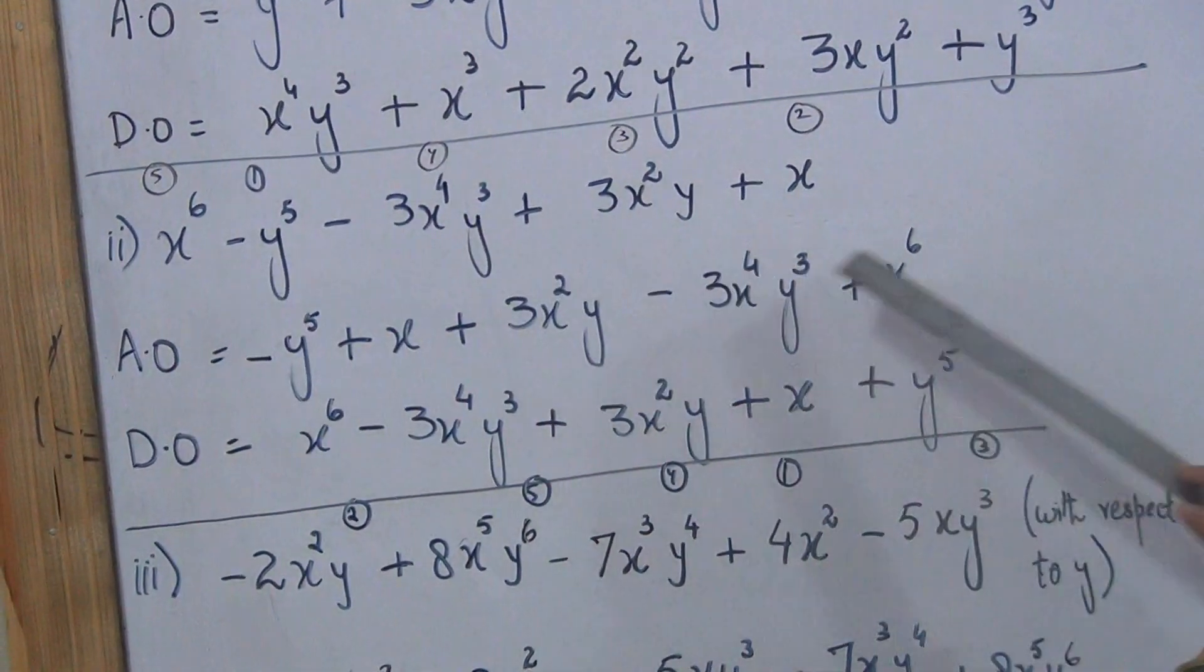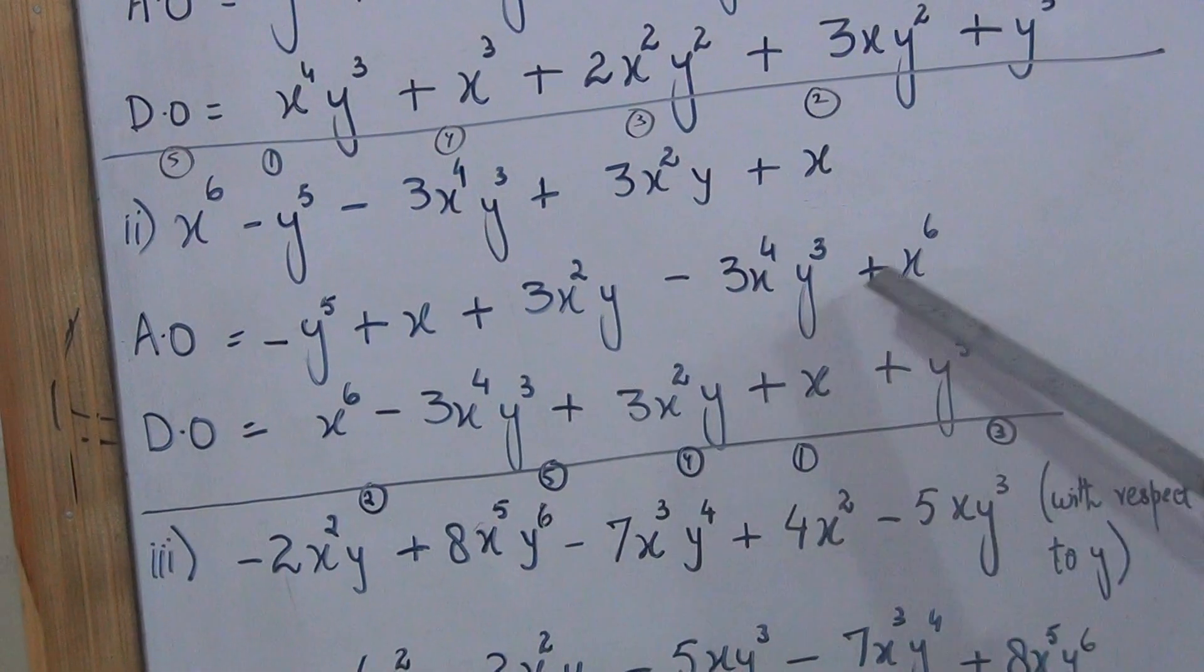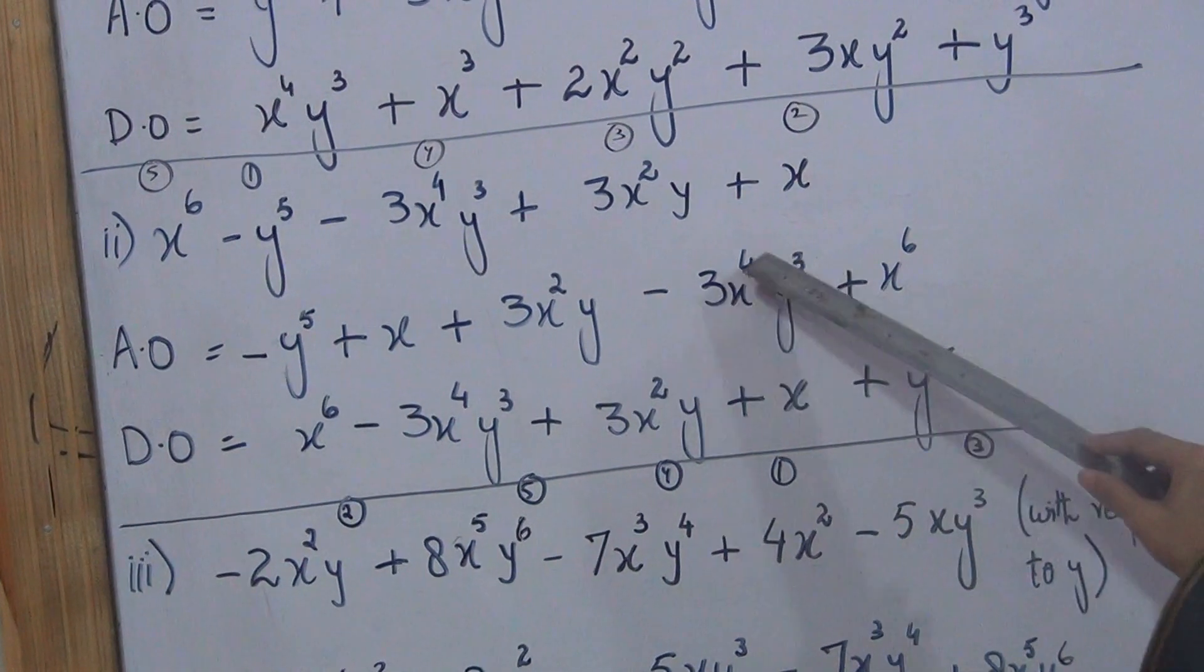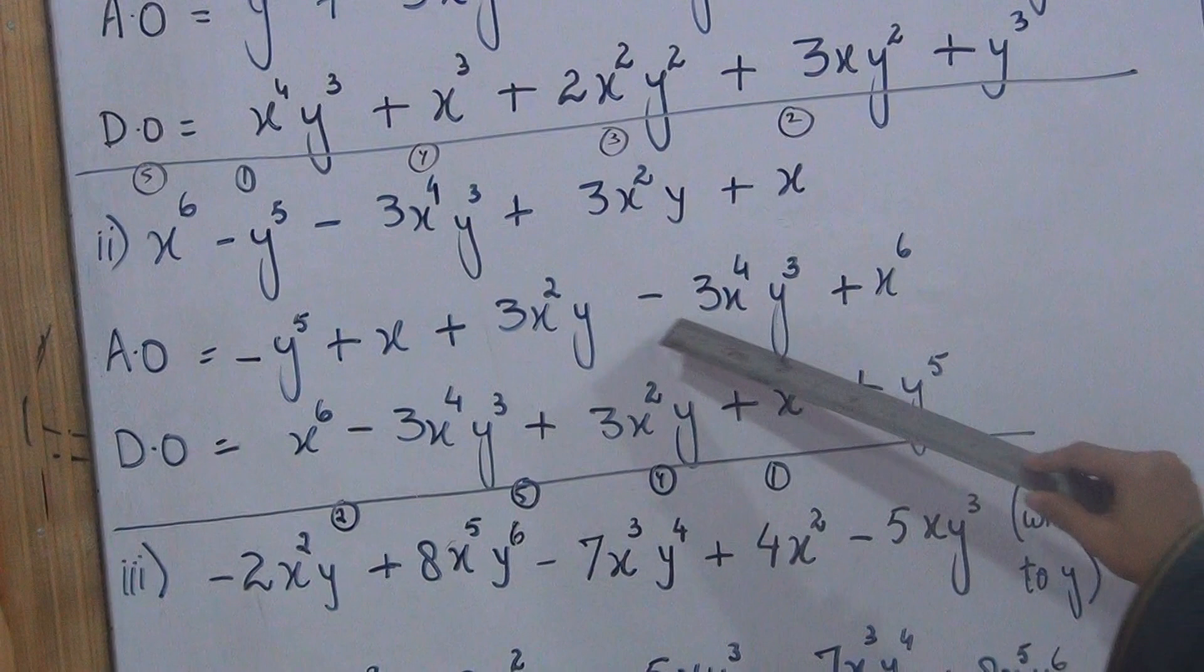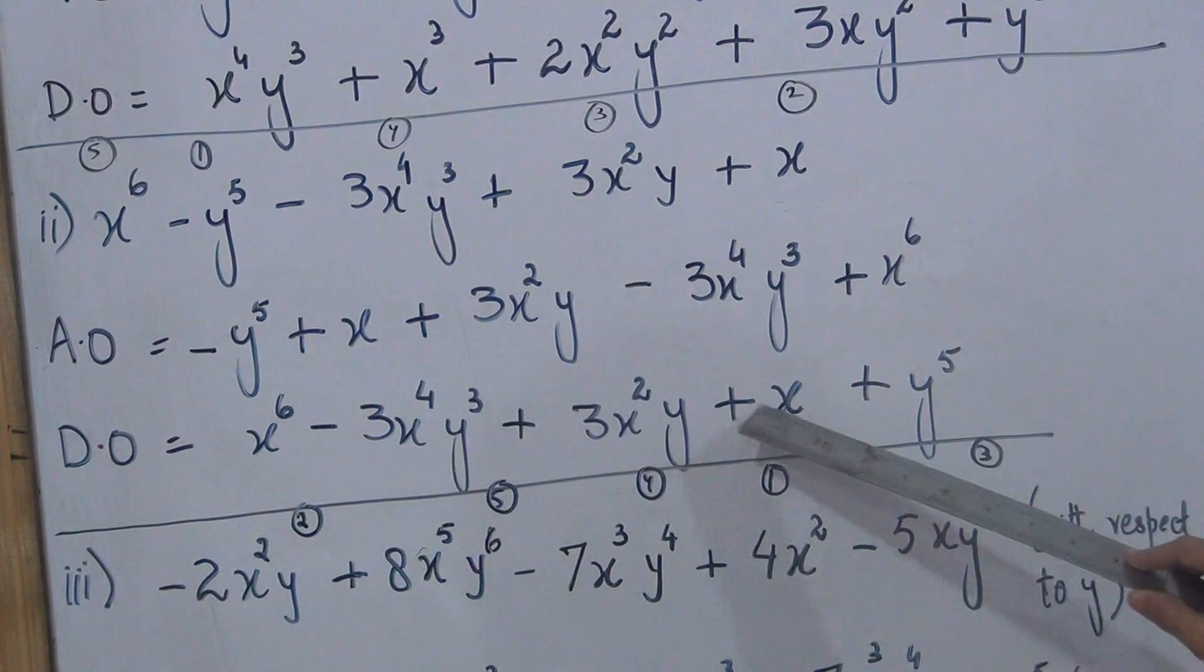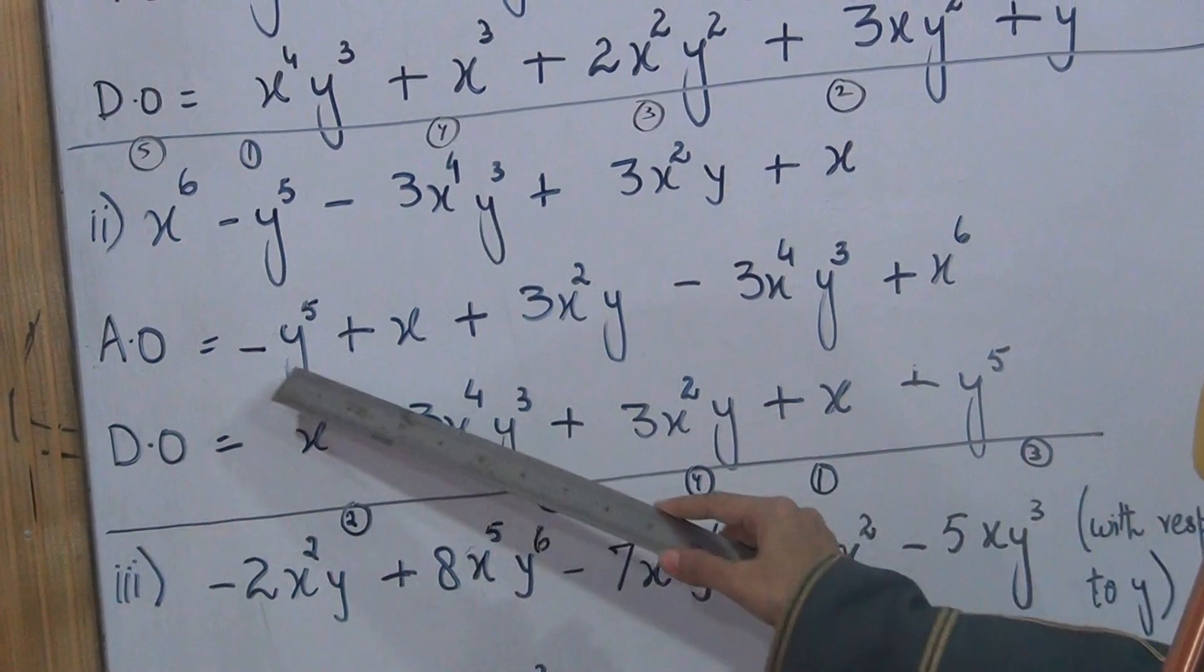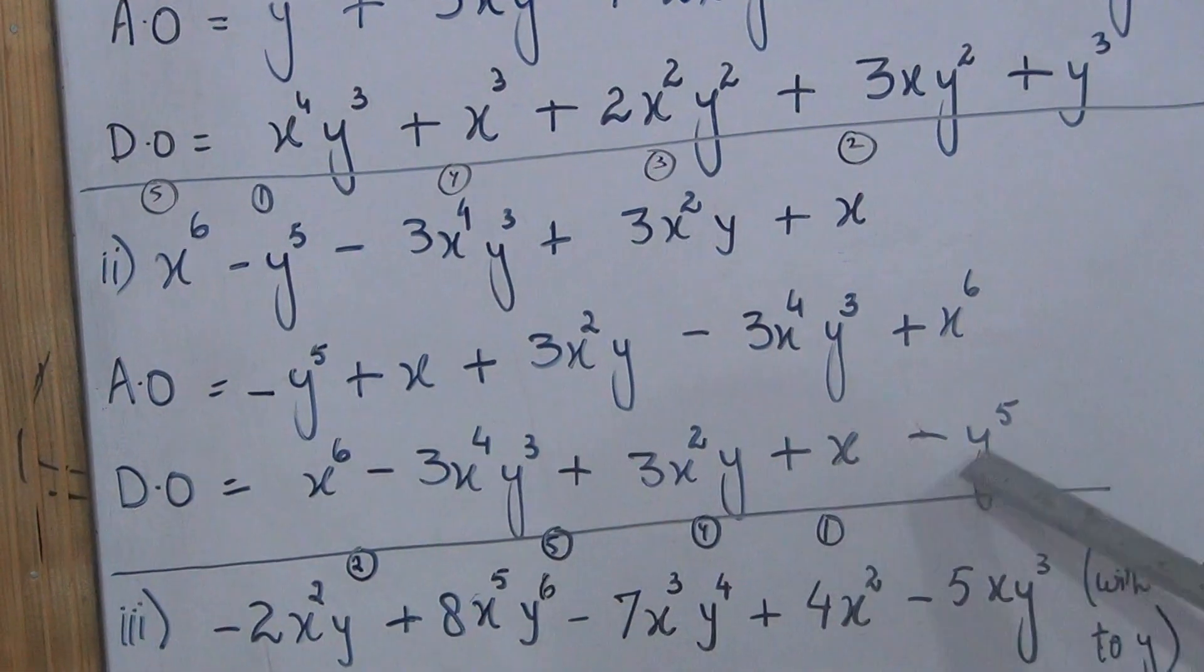Then six, x to power six. In descending order, we write it in reverse order. Plus x6 minus three x power four y cube, the term will come with sign. Plus three x square y, plus x, and here we have minus y5. So minus y5 should come.